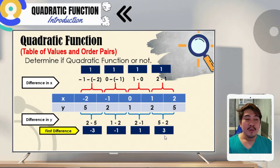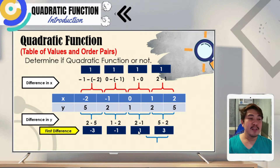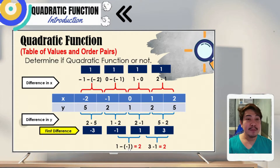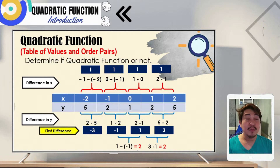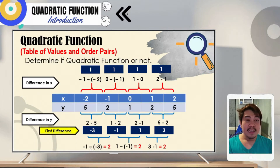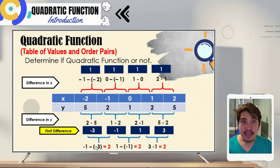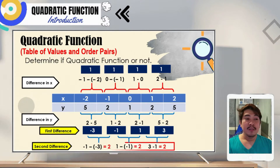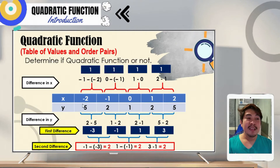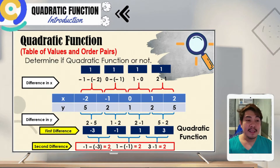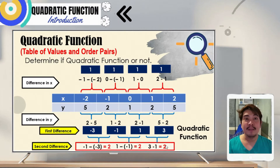Since the first differences in y are not equal, we get the second difference. From right to left: 3 minus 1 is 2, 1 minus negative 1 is 2, and negative 1 minus negative 3 is 2. The second differences are all equal to 2. Therefore, we can say that this table of values is an example of a quadratic function.